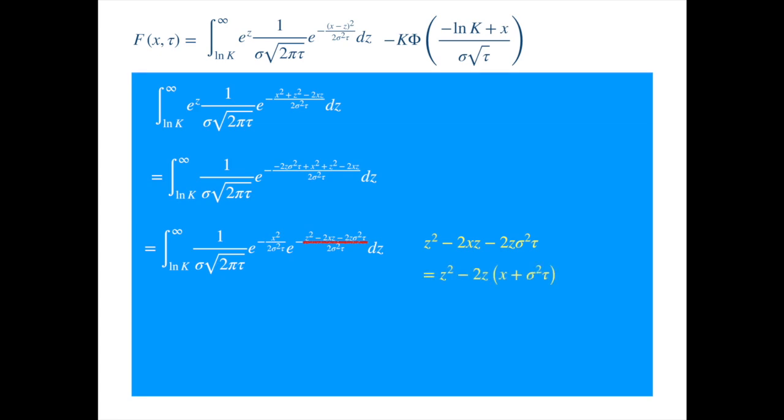First factor 2 out, and now we see that if we add the square of the term inside the brackets, then we get a complete square. So we add this term in the second exponential and subtract it in the first exponential.